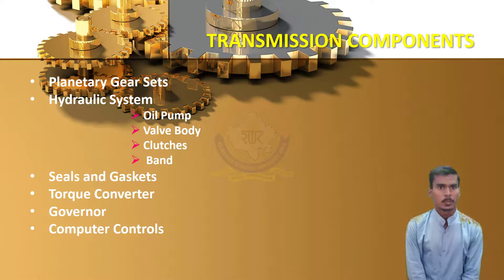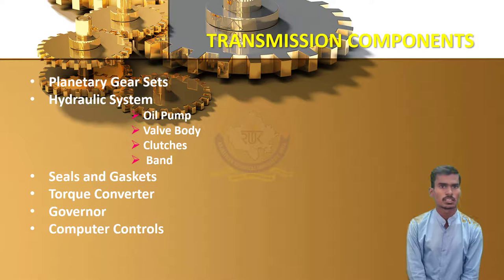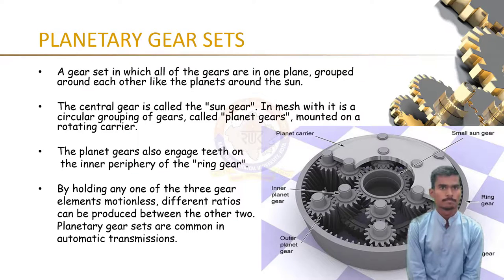There are many components in transmission systems such as planetary gear sets, hydraulic systems, seals and gaskets, torque converter, governor, and computer controls. Now we will study these components in more detail.